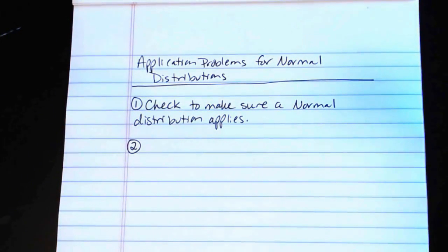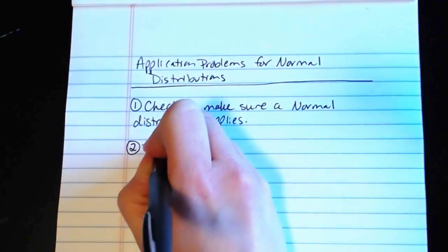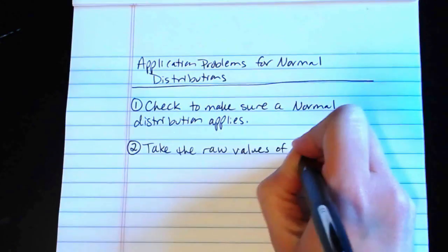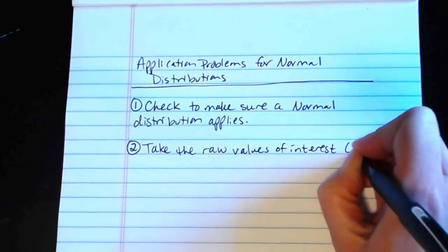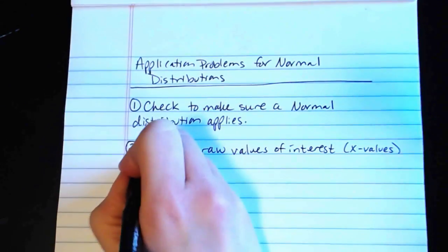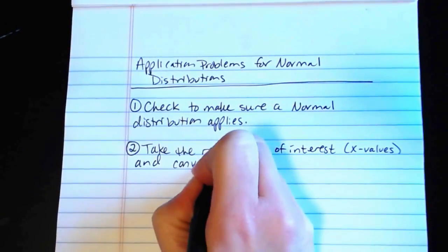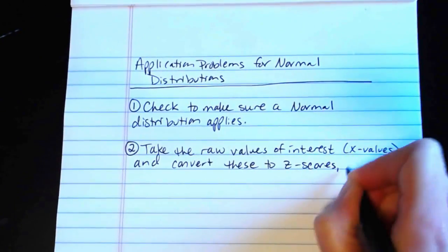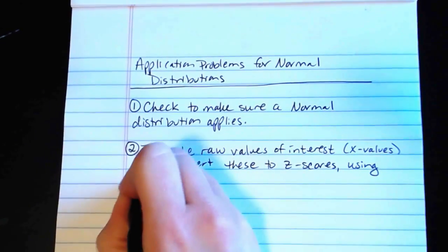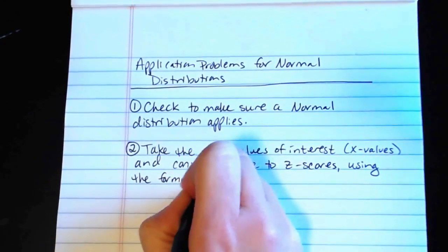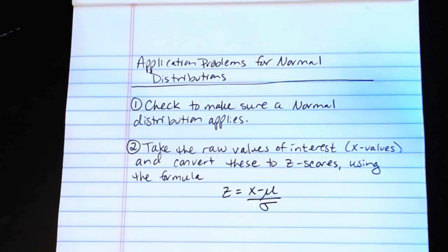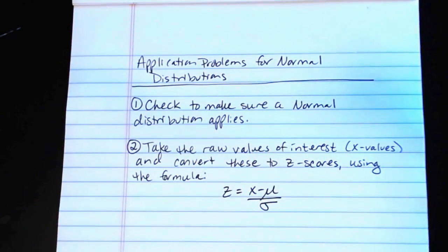The second step is to take the values of interest, or to take the raw values of interest, the x values, and convert these to z scores using the formula z equals x minus mu over sigma. So here's our formula that we'll use to convert from raw values or x values into the z scores or standard scores.